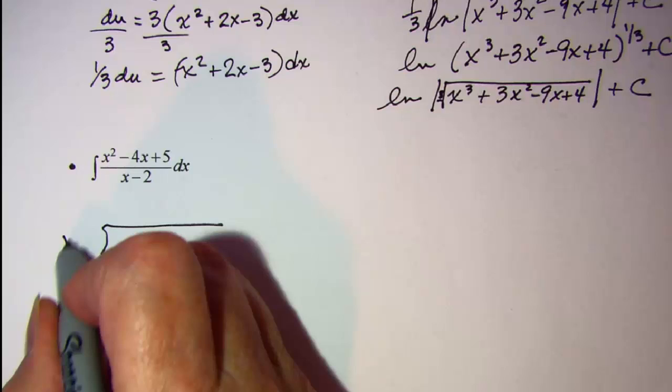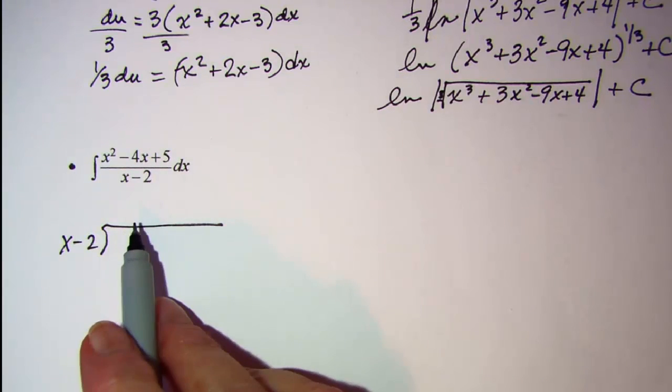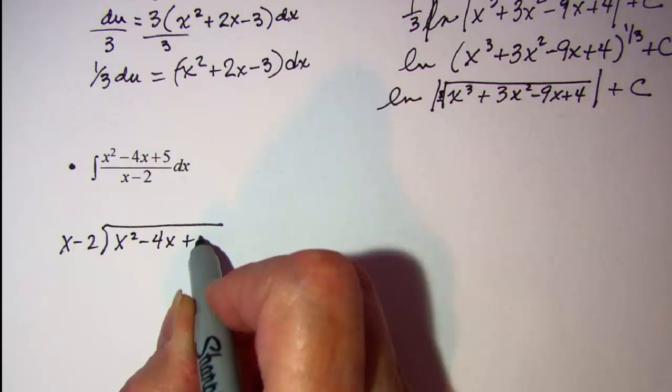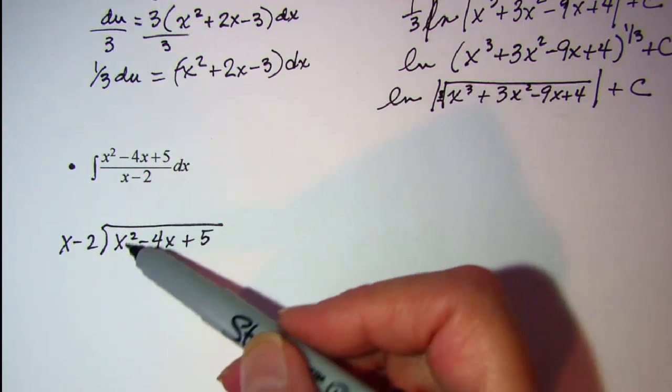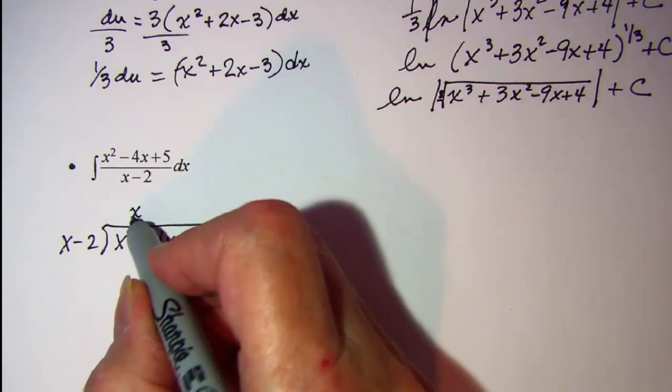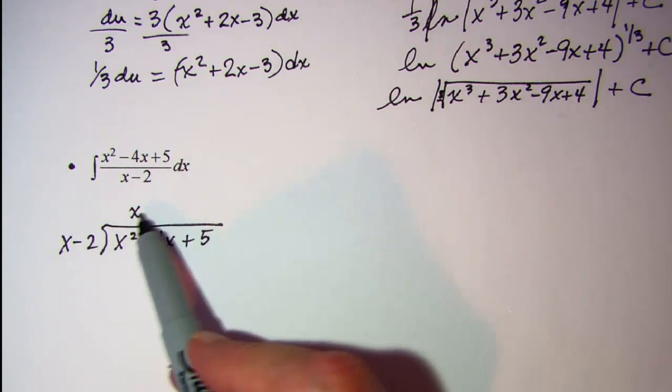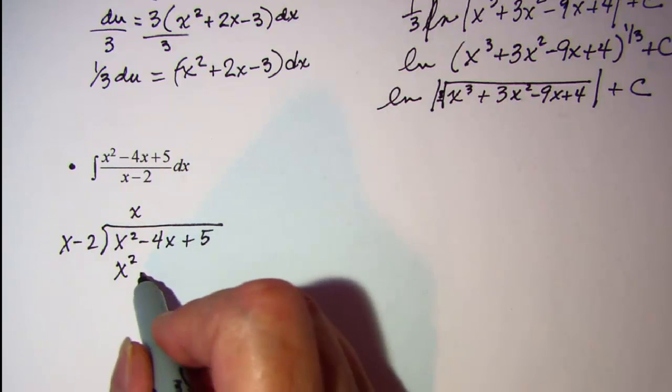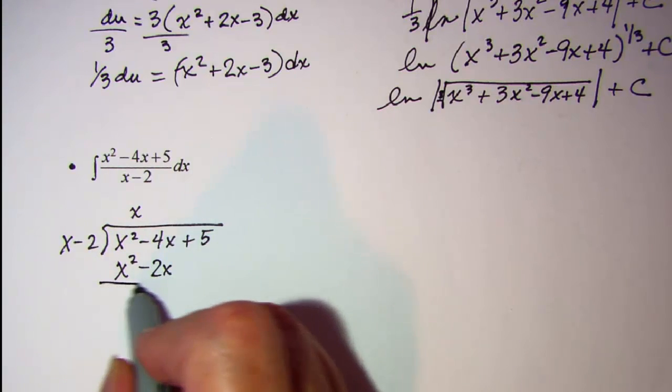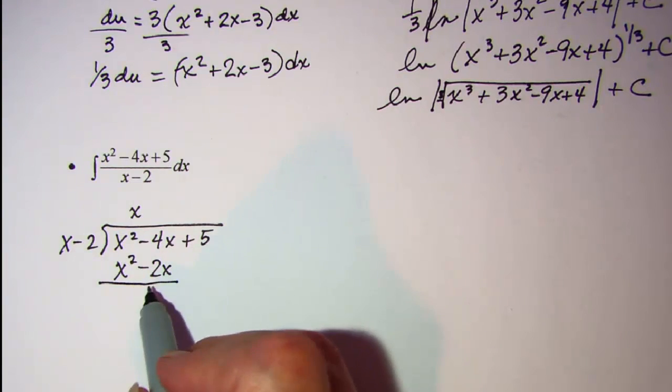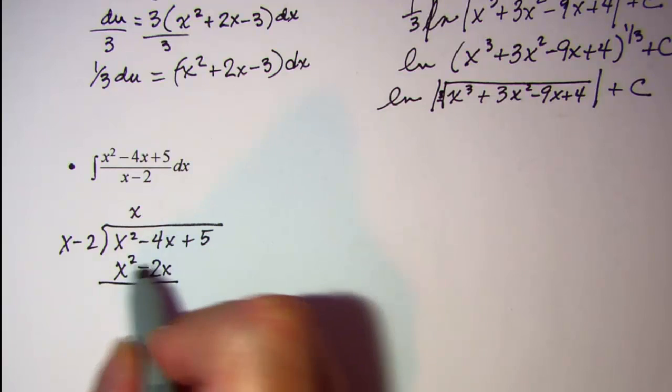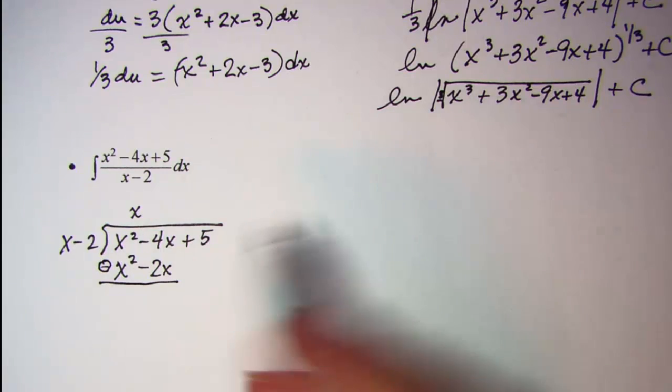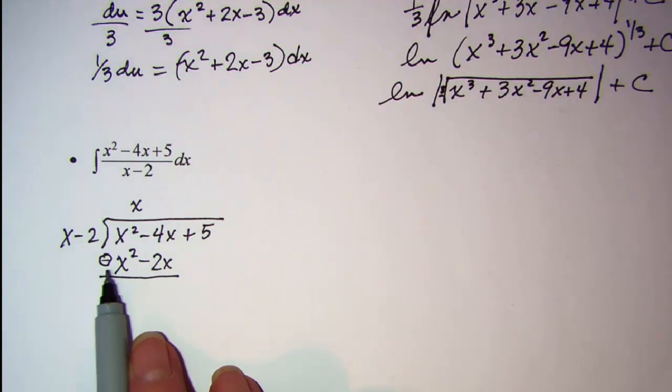I have x minus 2 as my divisor and x squared minus 4x plus 5 as my dividend. X squared divided by x is x, then I multiply x times the divisor. X times x is x squared, x times negative 2 is negative 2x. My next step is to subtract algebraically, which means we change the signs and add.